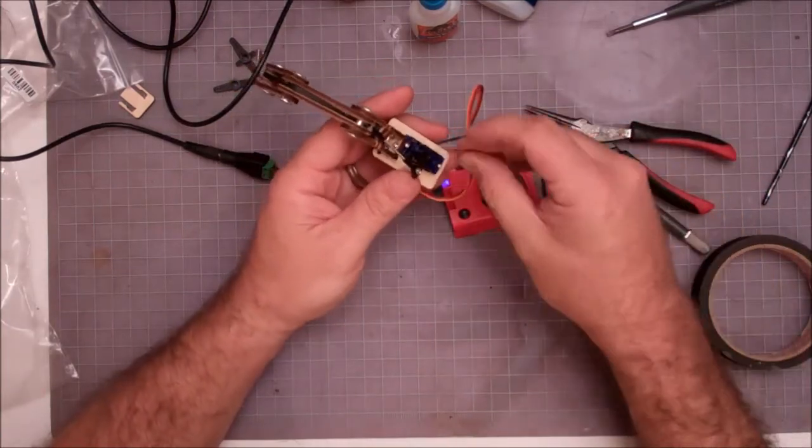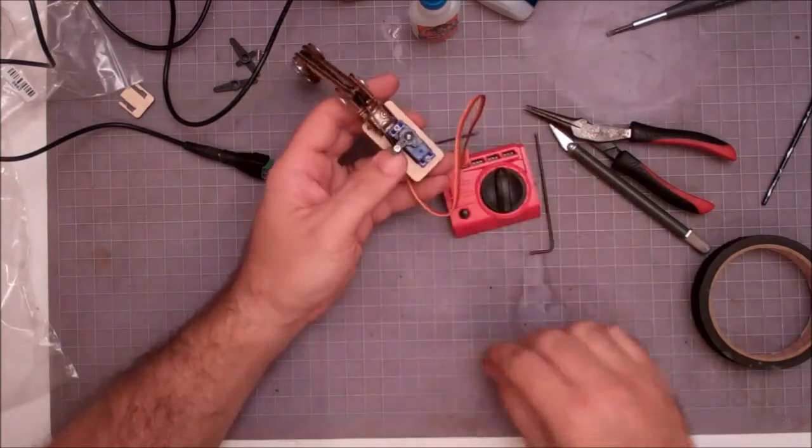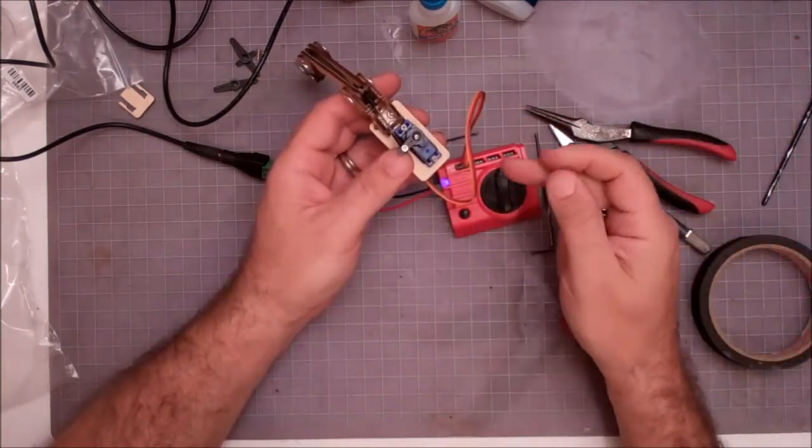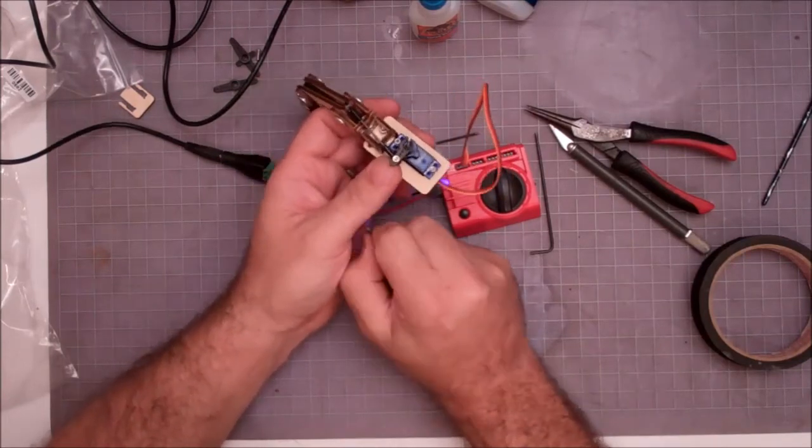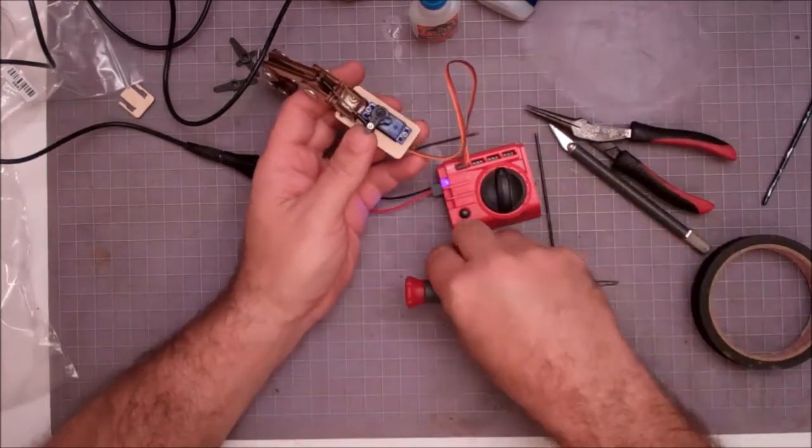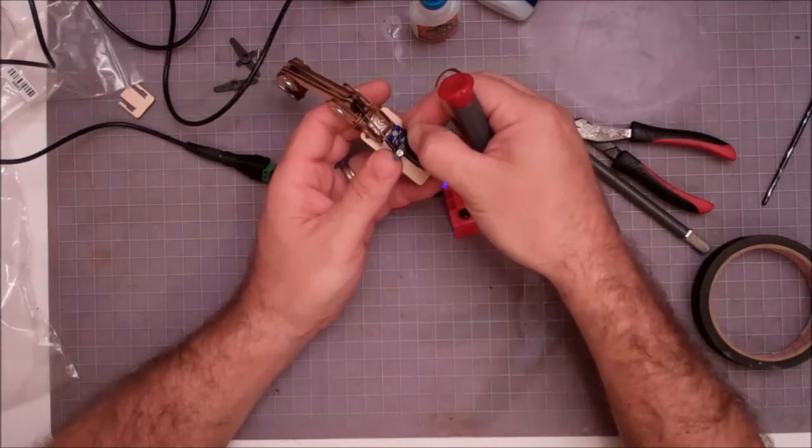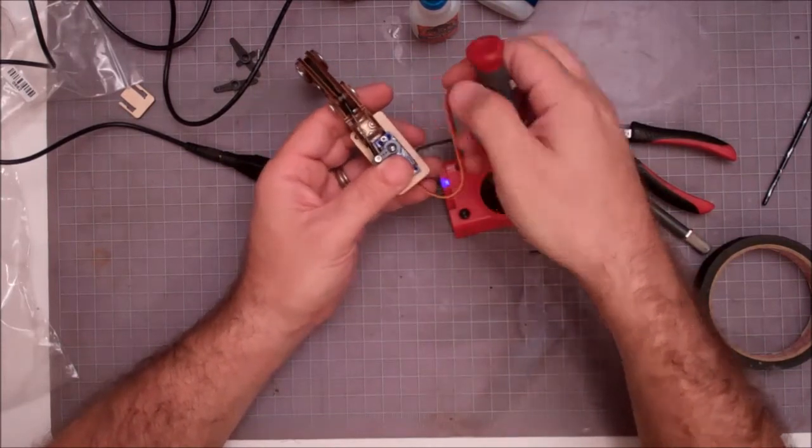Once you've got that in place and you like it, you then just take your servo horn screw and you drop it in there.